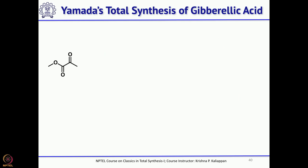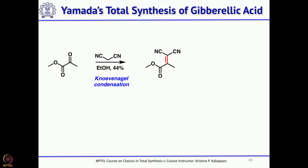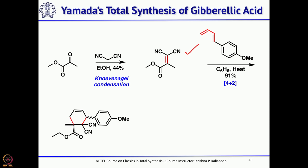His total synthesis started with methyl pyruvate; a nominal condensation with malononitrile gave the dienophile. The dienophile is ready, and the diene is very easy to make from anisaldehyde — in one step. Once the diene is ready, do the Diels-Alder reaction. When you do the Diels-Alder reaction, you can see the quaternary methyl group is fixed, but you have one extra unwanted cyanide that needs to be removed.